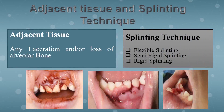Another factor affecting replantation success is the condition of adjacent tissue. We have to examine whether there is any laceration or loss of alveolar bone. In this case, the patient had a laceration at the gingiva, and we believe there was also a loss of alveolar process bone at the anterior maxilla region.